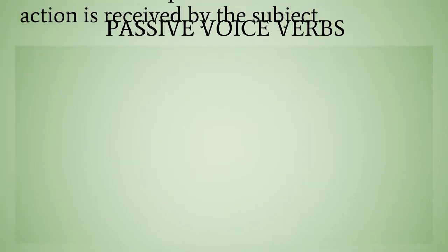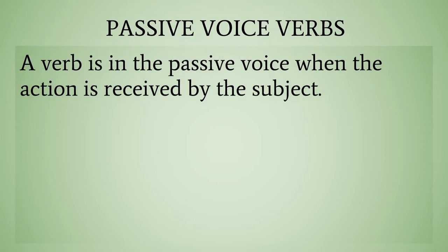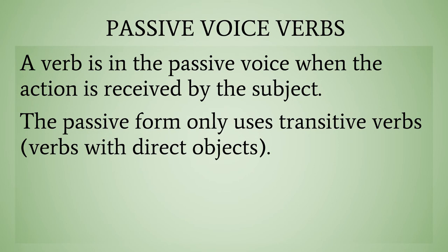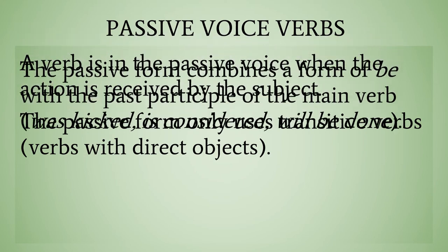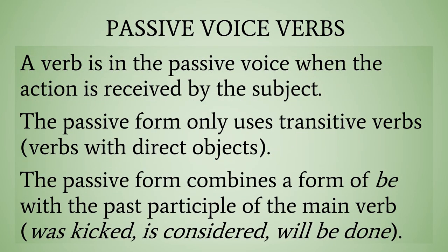In passive voice verbs, a verb is in the passive voice when the action is received by the subject. The passive form only uses transitive verbs — that is, verbs with direct objects. The passive form combines a form of 'be' with the past participle of the main verb. For example: was kicked, is considered, will be done.